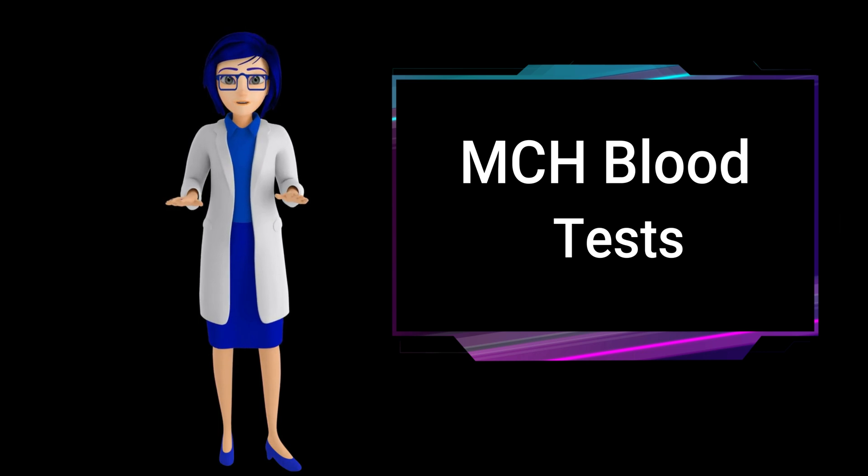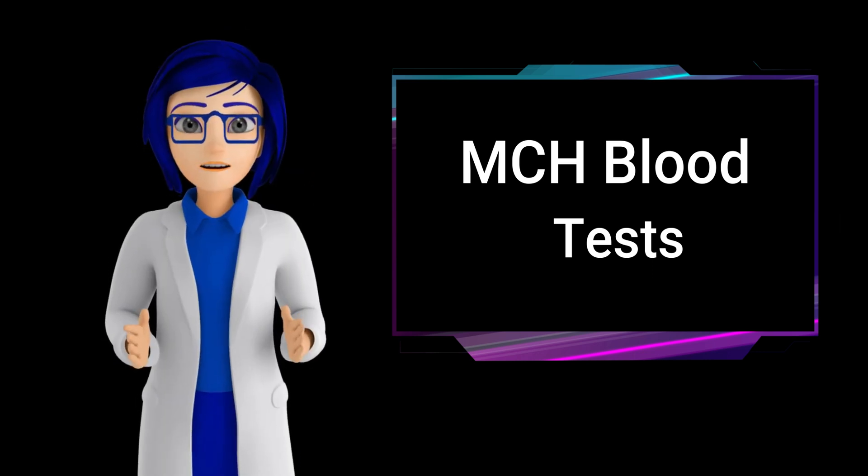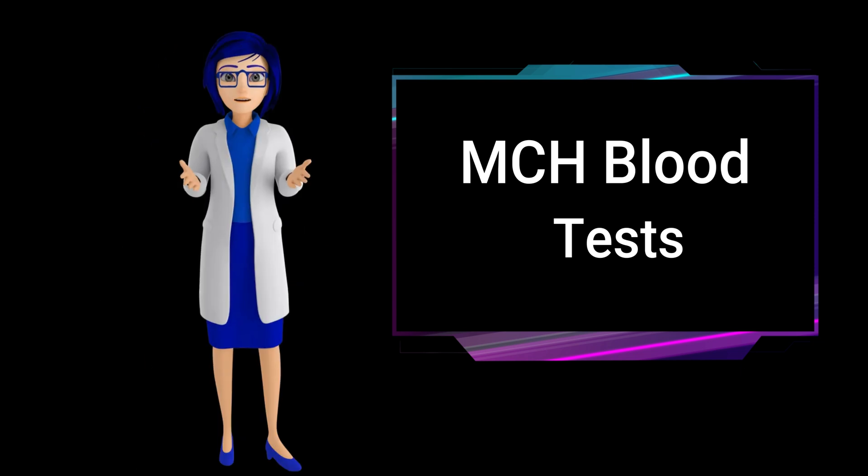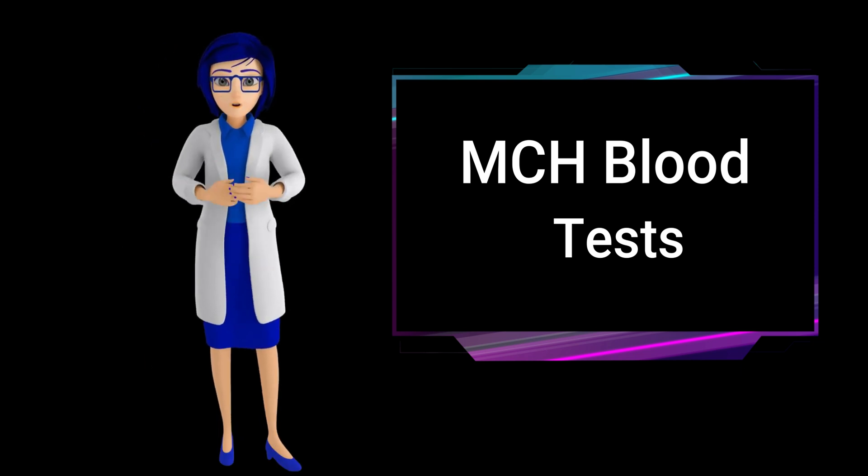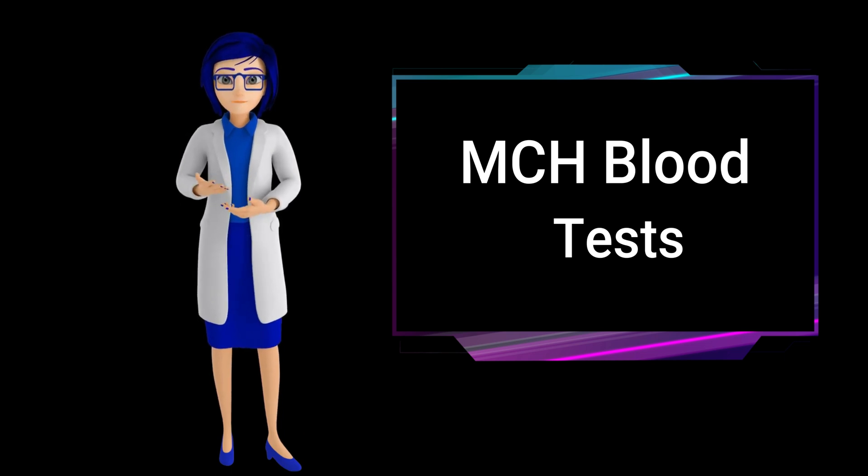Iron deficiency anemia: Iron is essential for producing hemoglobin, the protein in red blood cells that carries oxygen. When the body doesn't have enough iron, red blood cells become smaller and contain less hemoglobin, leading to low MCH levels.